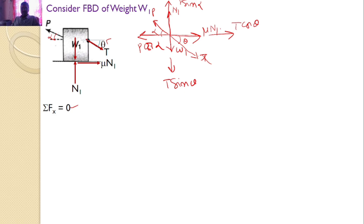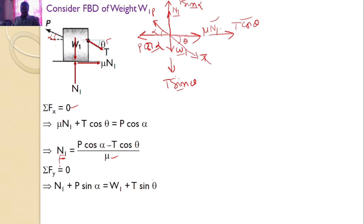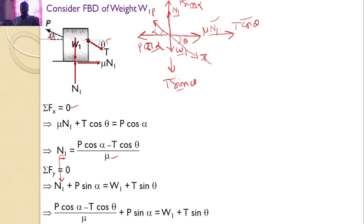By considering sigma Fx = 0 with three forces — mu*N1, T cos(theta), and P cos(alpha) — we get: mu*N1 + T cos(theta) = P cos(alpha), so N1 = (P cos(alpha) - T cos(theta)) / mu. Similarly, sigma Fy = 0 with two forces up and two down gives: N1 + P sin(alpha) = W1 + T sin(theta). Substituting N1, we get: (P cos(alpha) - T cos(theta))/mu + P sin(alpha) = W1 + T sin(theta).